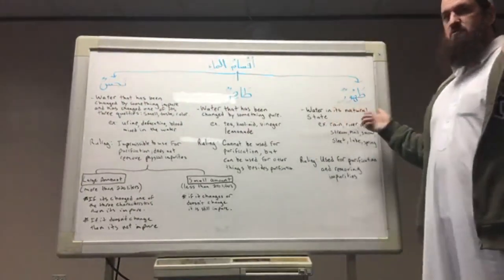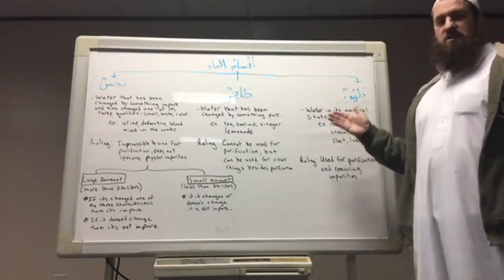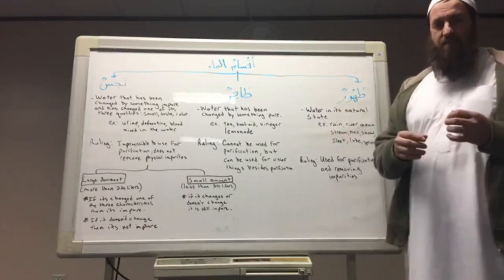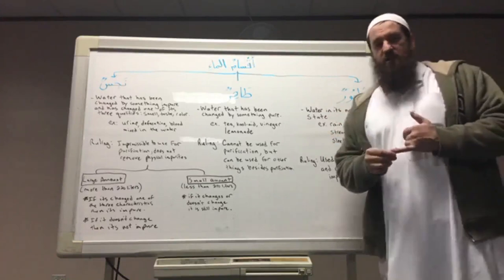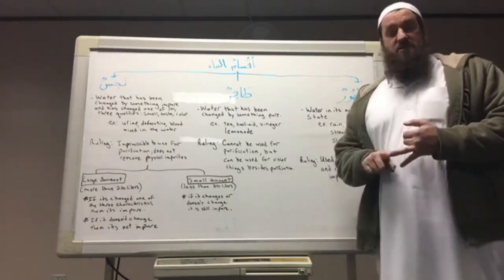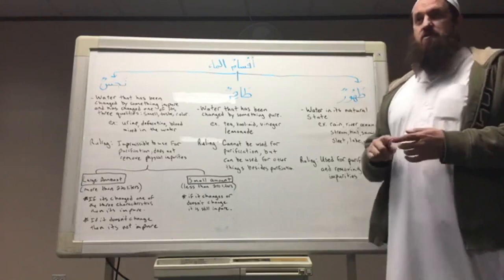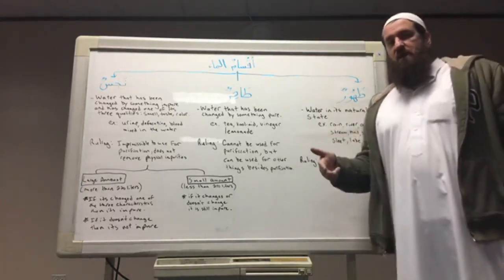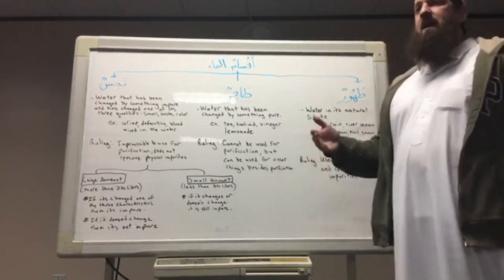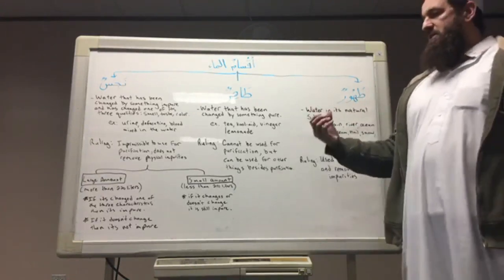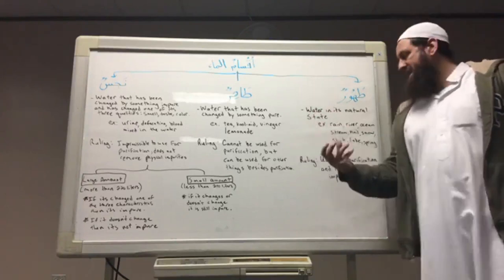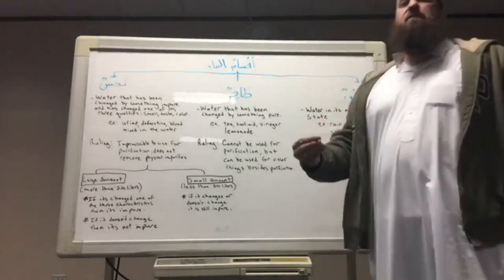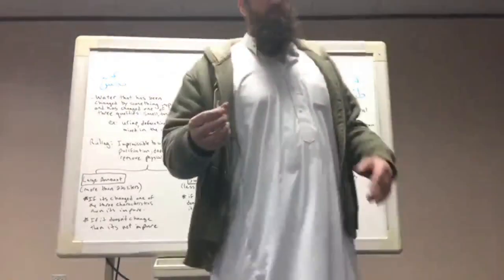The first category, Tuhurun, means water which is pure, or water which remains in its natural state, the way that Allah subhanahu wa ta'ala created it — whether it's rainwater, sleet, hail, snow, water found in rivers, brooks, streams, or ponds. Tuhur is the water which remains in its natural state, and this is the only type of water that a Muslim can use for purification.